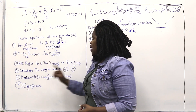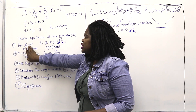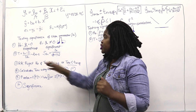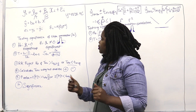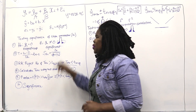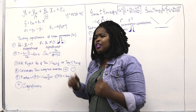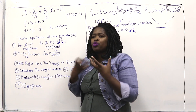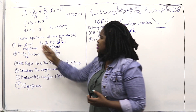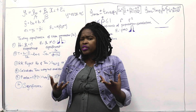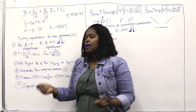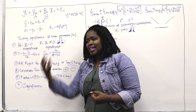If you fail to reject, it means the relationship is actually insignificant, so you cannot use grade 11 to predict grade 12. But if you reject, it means there is a significant relationship, meaning grade 11 can be used as a predictor.